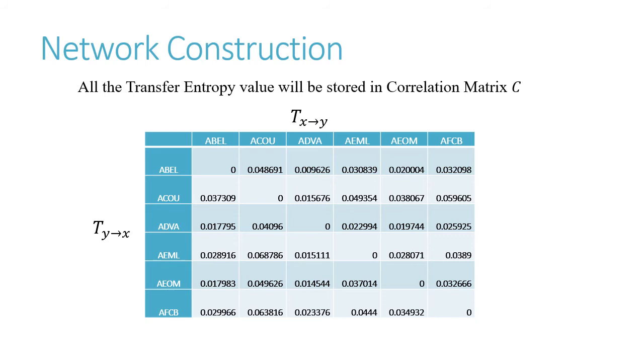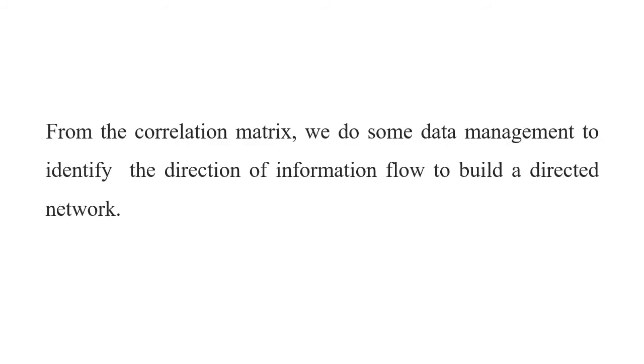For example, we choose the cell of AQ to Abell. We know the value is 0.037309. The value of Abell to AQ is 0.0489691. Based on these two values, we easily can recognize the direction. The direction of information is from Abell to AQ since their value is bigger than AQ to Abell. From the correlation matrix, we do some data management to identify the direction of information flow to build a directed network.